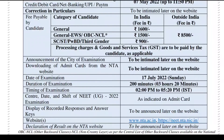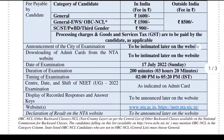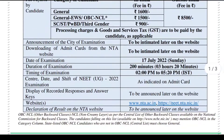The duration of the examination is 200 minutes and the timing is 2 p.m. to 5:20 p.m. The center, date, and shift for NEET UG 2022 examination will be indicated on the admit card. The admit card will show the center name, date, and shift.